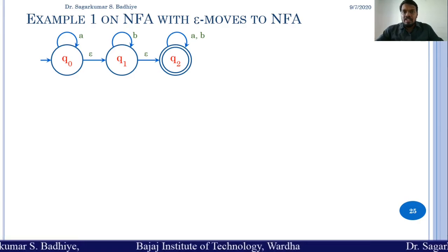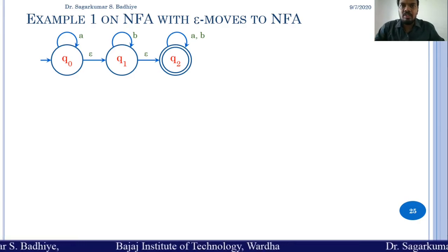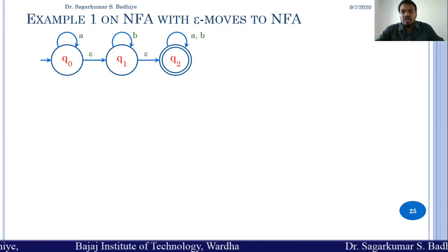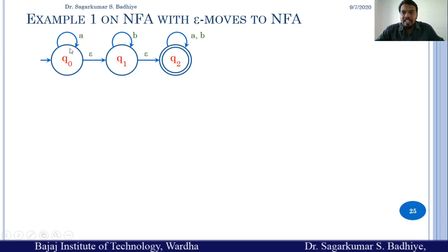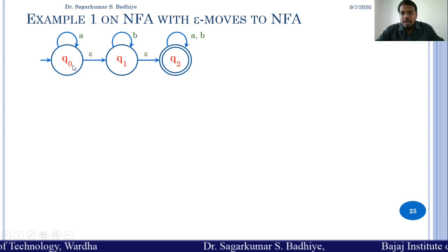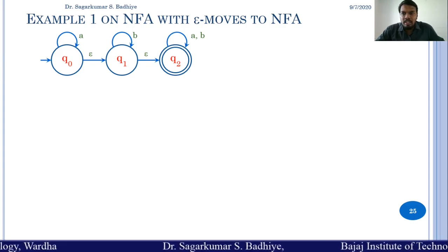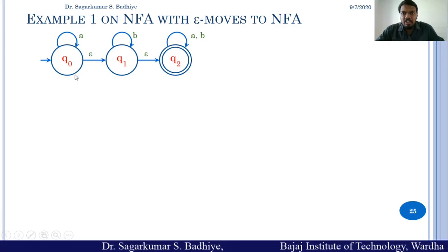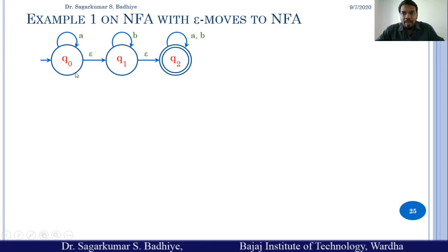The first step in the conversion of NFA with epsilon move to NFA is to find the epsilon closure of all the states of the given NFA with epsilon move. Epsilon closure of any state is the set of states that are reachable from the given state on reading epsilon.